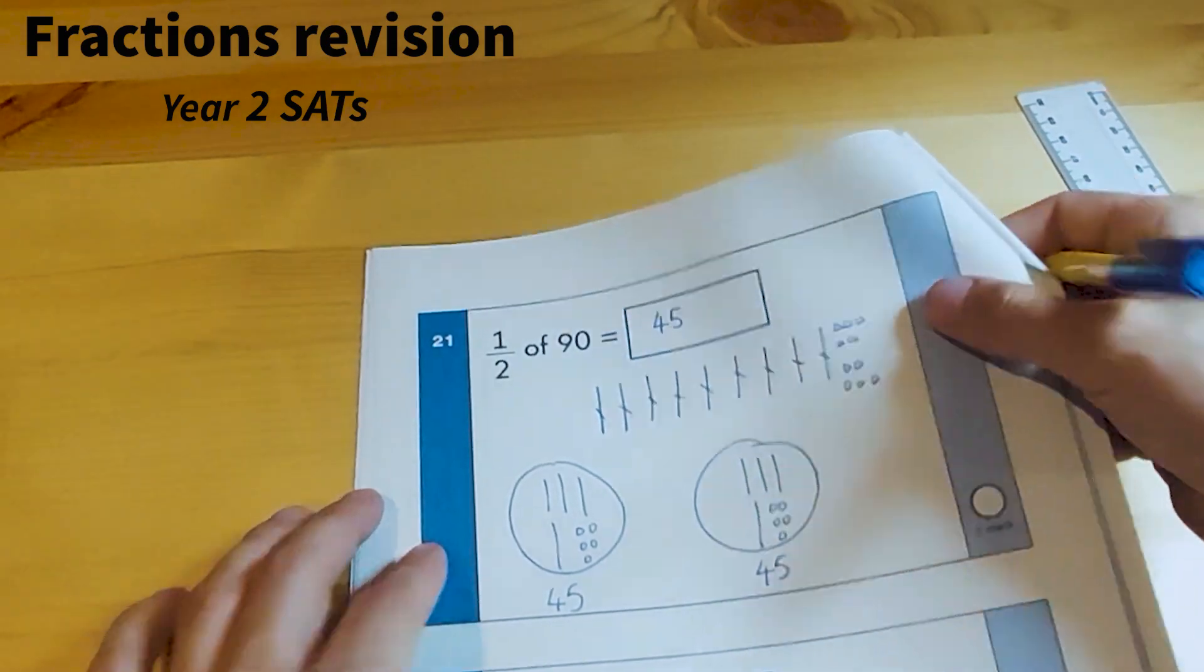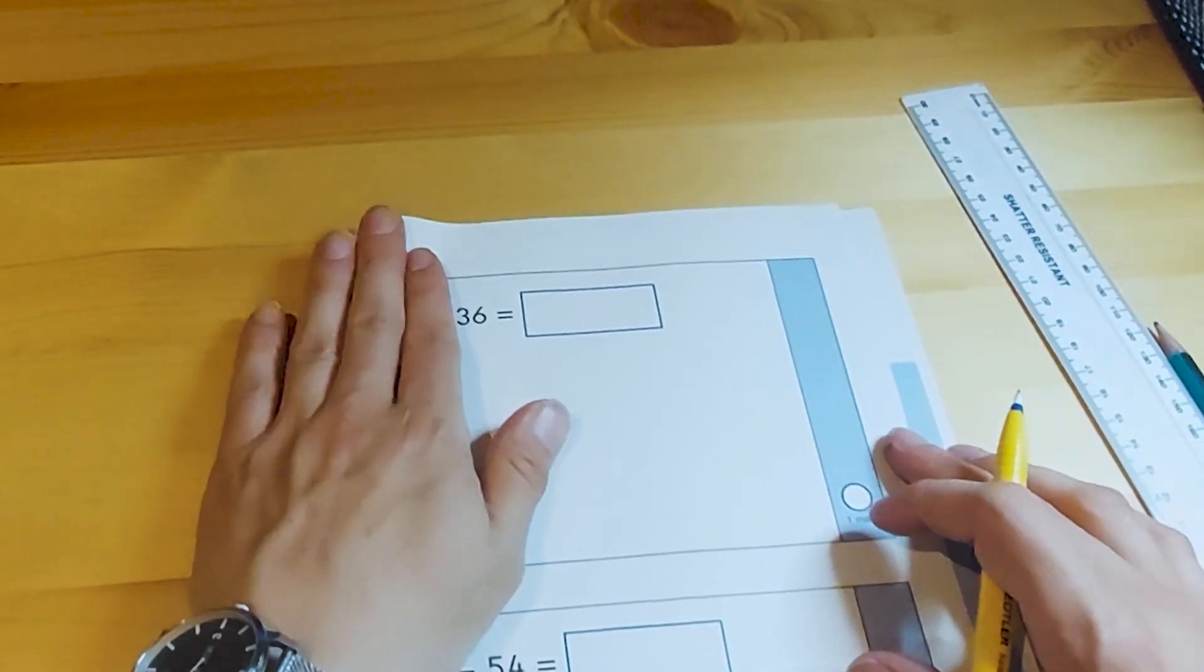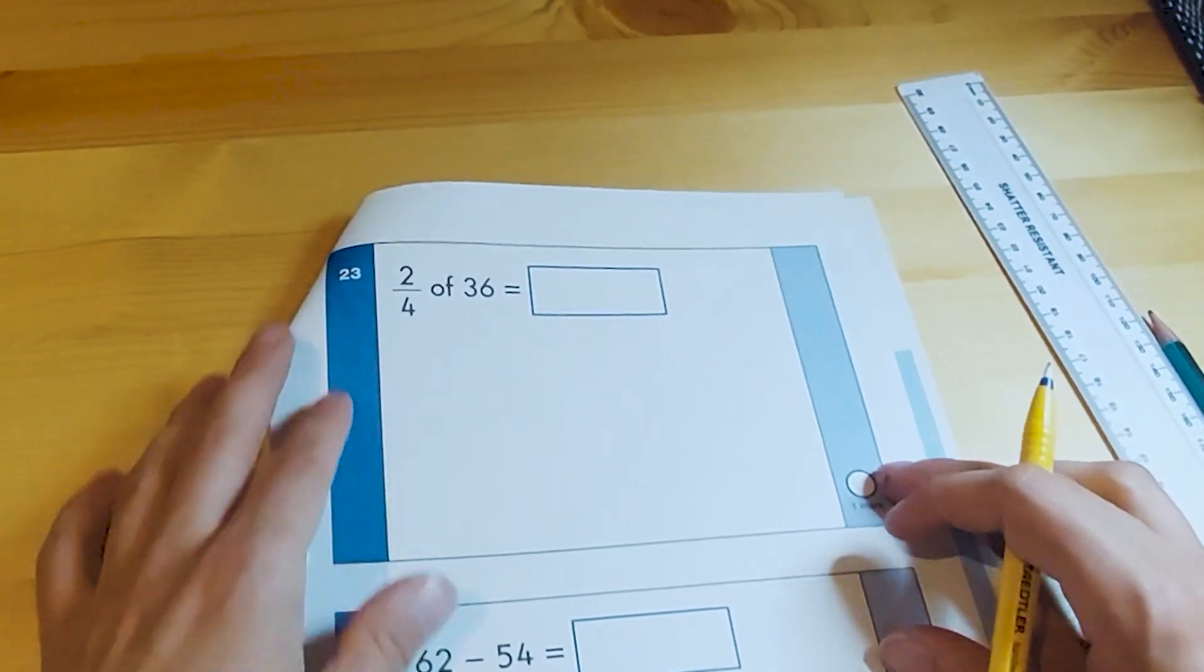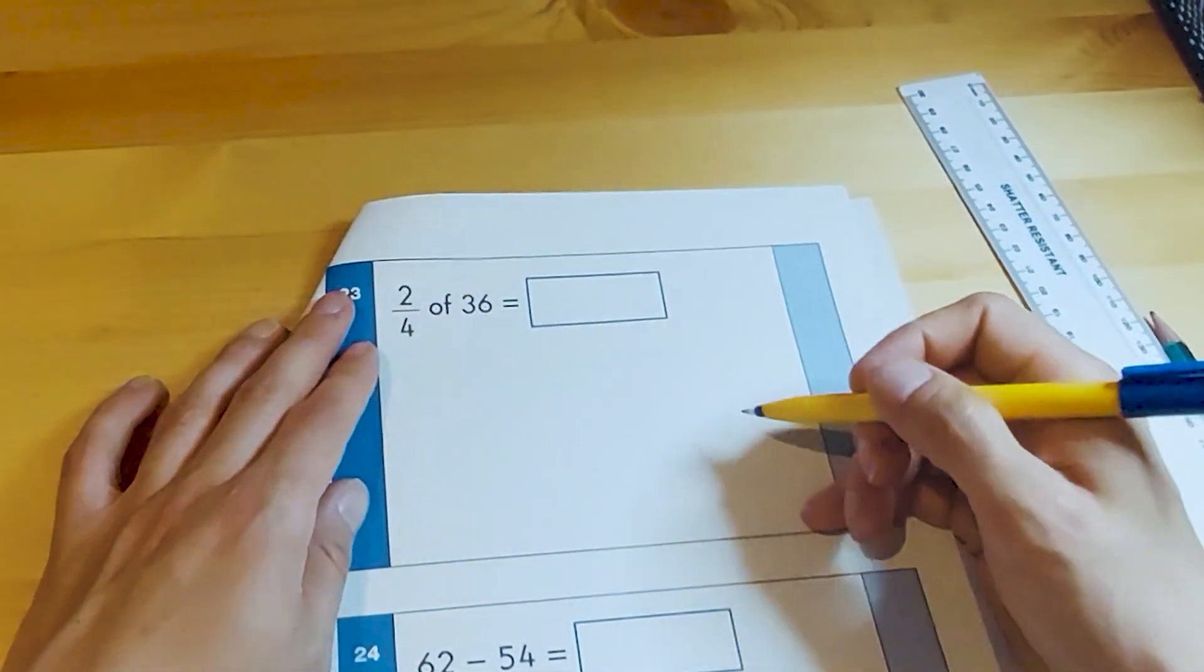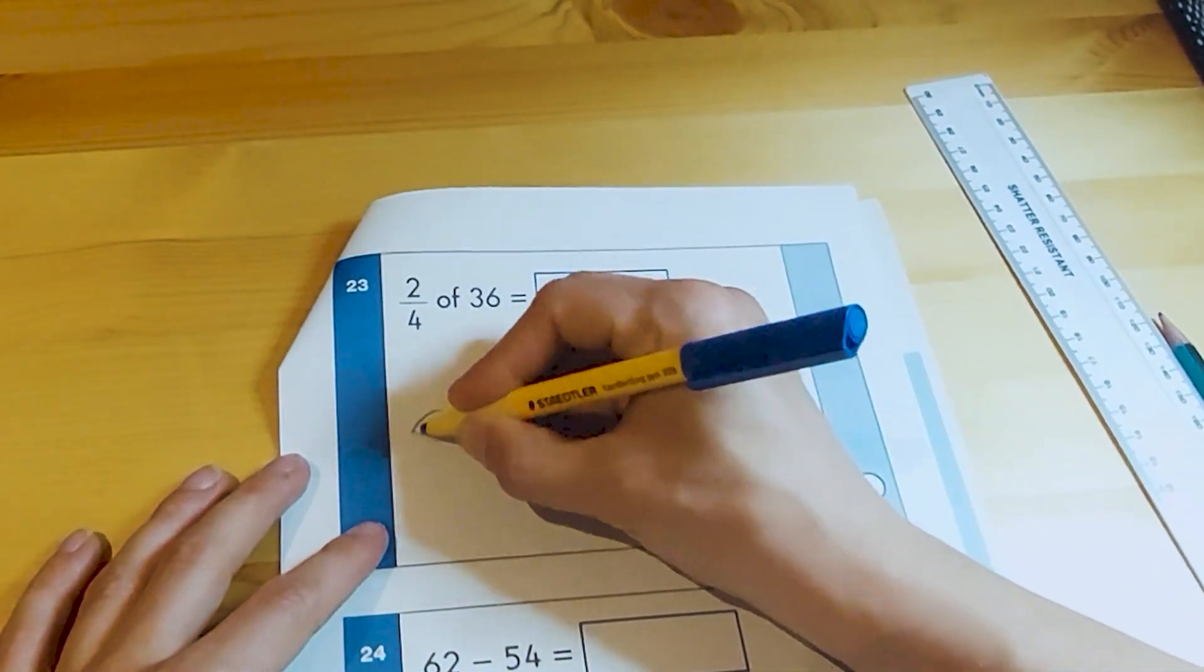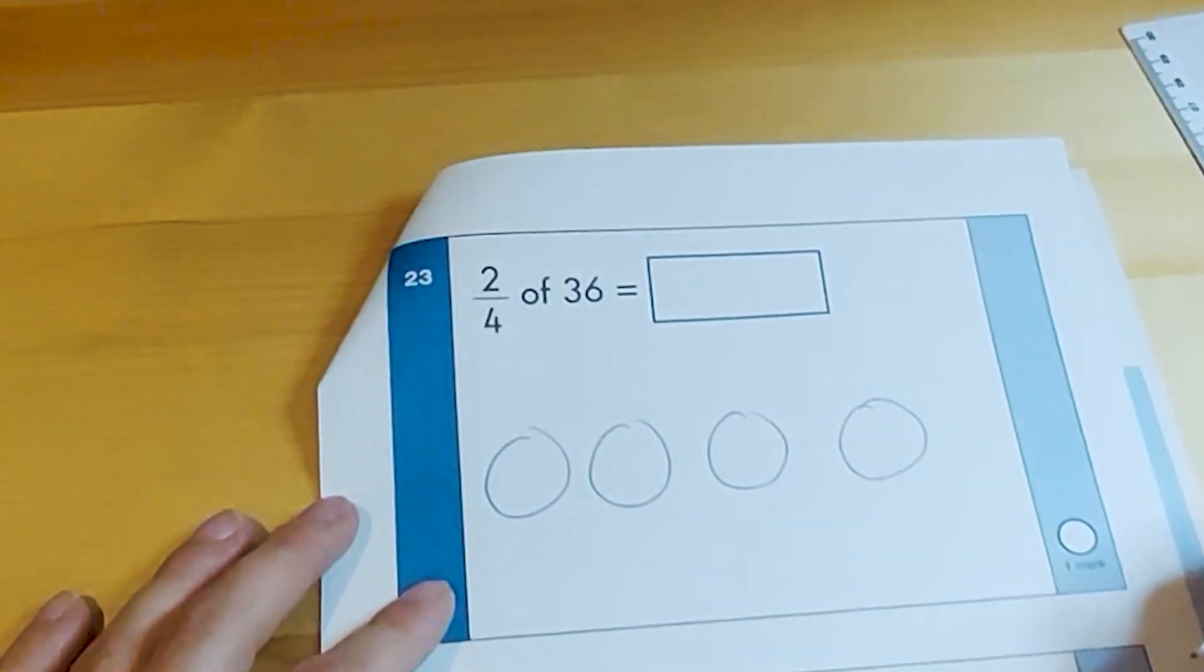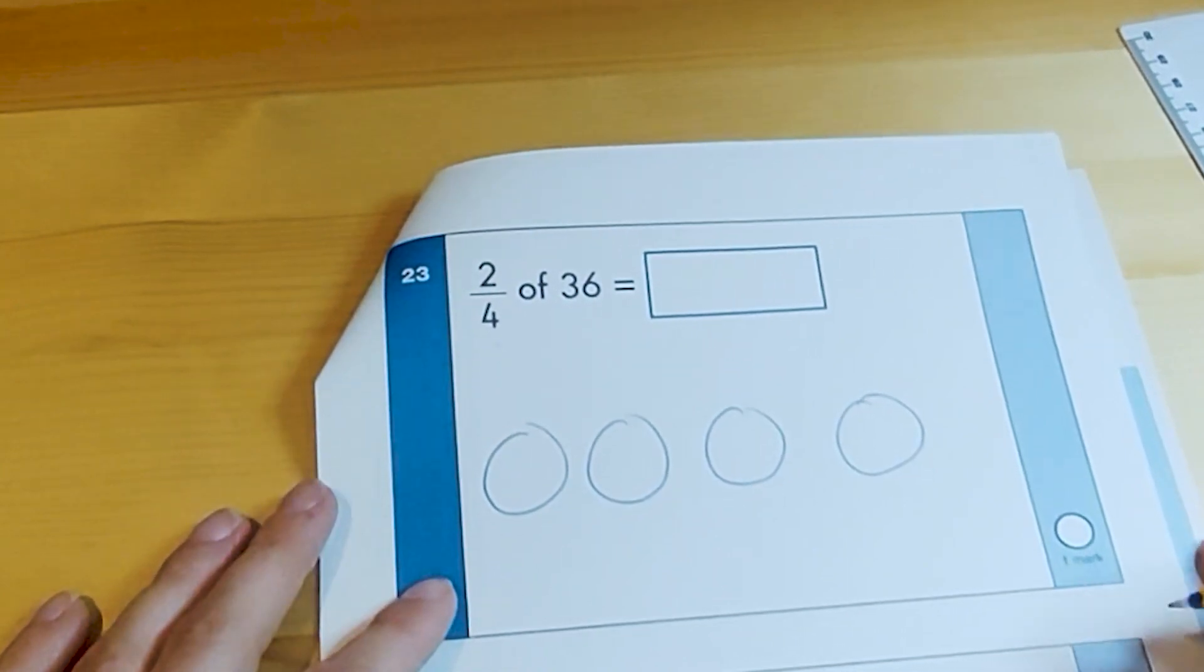Next fraction question is this one: two quarters of 36. Going through the same process, this number here tells us how many groups we need to share it into, which is four: one, two, three, four. So we share out the 36 into those four groups.